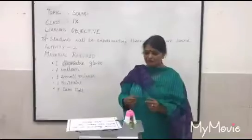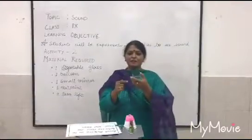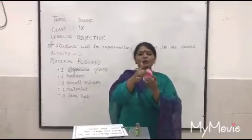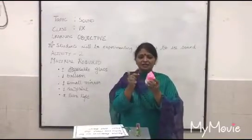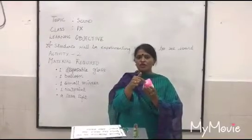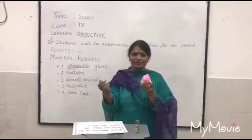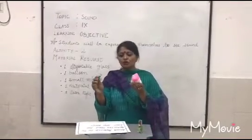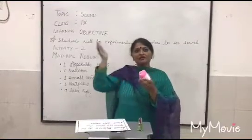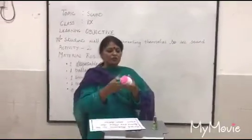Now our second activity for the same concept. The material we require: a disposable glass. We have cut the bottom of the glass and fixed a balloon over this. This is a small plain reflecting mirror which I have pasted by using a nail paint — you may use any adhesive. This is the source of laser light. The laser light falling on this mirror and reflected back on the screen is going to dance with my sound.